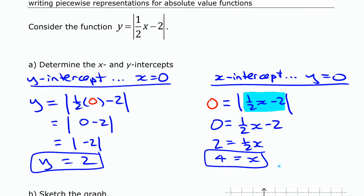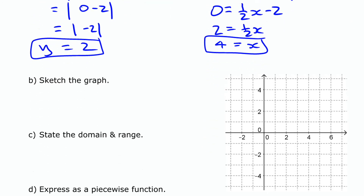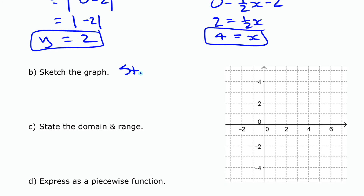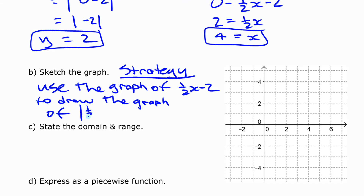Now to create the graph, we're going to use our knowledge about the graph of ½x minus 2 to think about what the absolute value of ½x minus 2 looks like. Our strategy is to use the graph of ½x minus 2 to draw the graph of the absolute value of ½x minus 2. So the first thing we need to do is draw ½x minus 2.